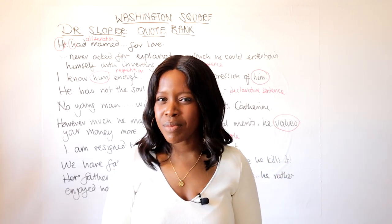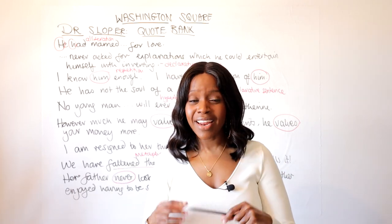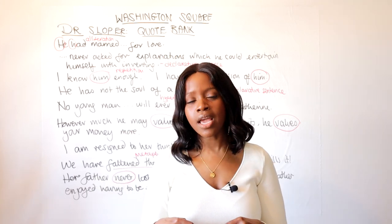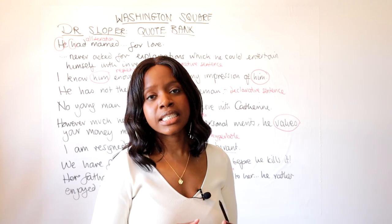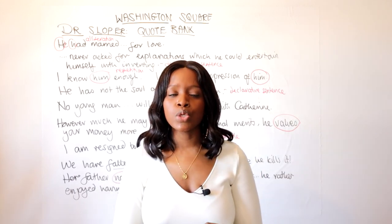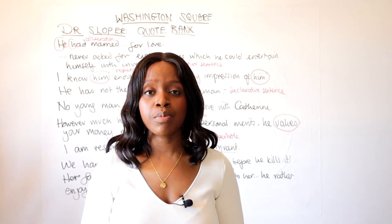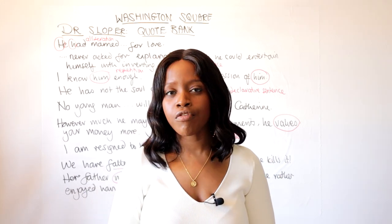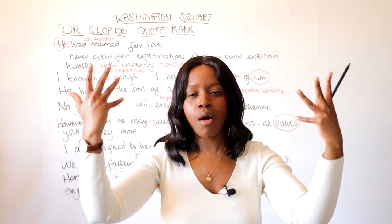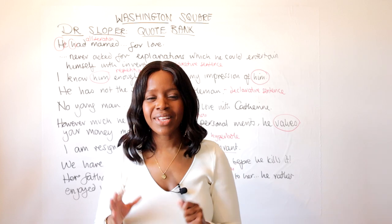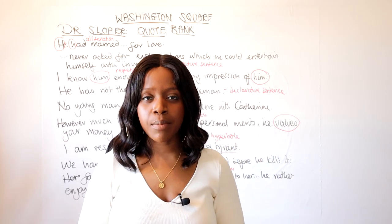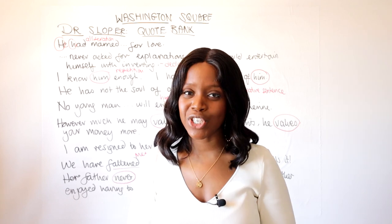We as readers are meant to view Dr. Sloper with disdain, especially in how he treats his daughter. However, he is able to clearly see through Maurice and functions as the gatekeeper of New York elite society by preventing the marriage — which would have placed Maurice back firmly within that elite circle. That's really it for the quotations to revise when studying the character of Dr. Sloper in Washington Square.